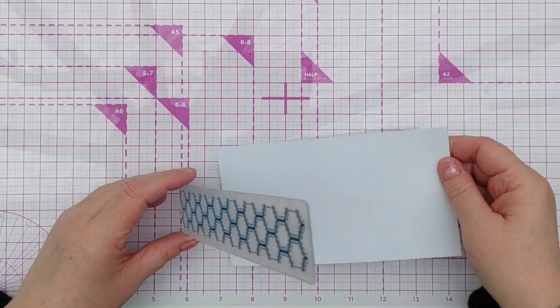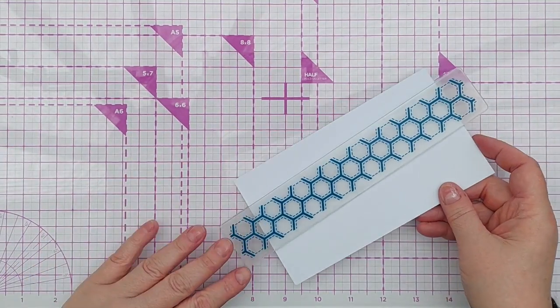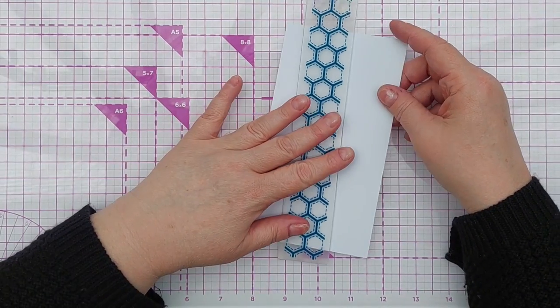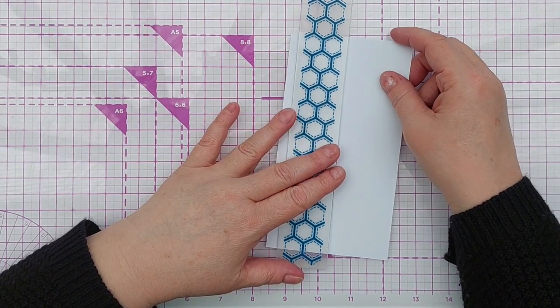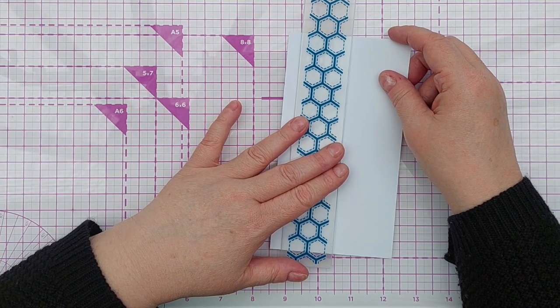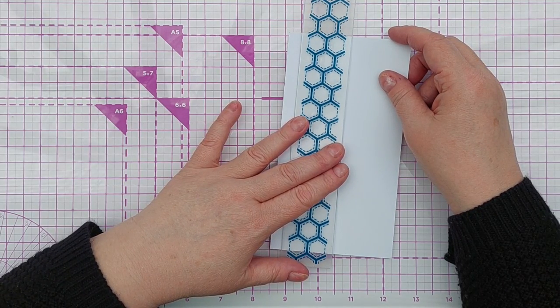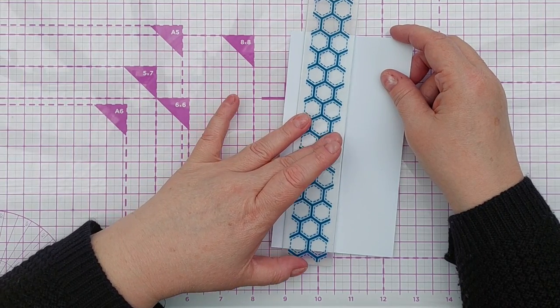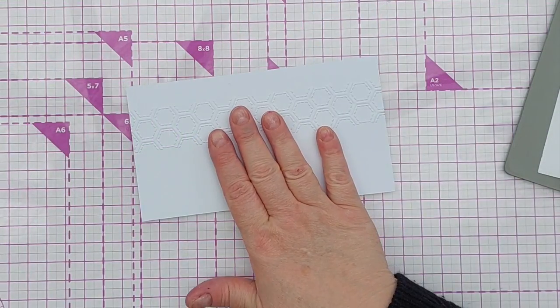I've got here an embossing folder with a honeycomb or hexagon pattern on it. I'm going to run that through my cuttlebug making sure it's nice and straight.